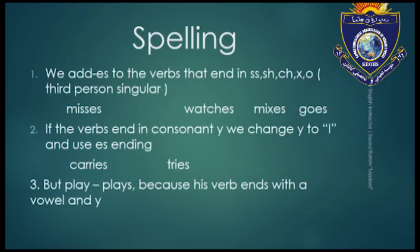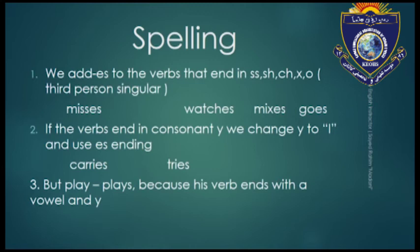Spelling rules: we add ES to verbs that end in S, SS, SH, CH, X, or O — for the third person singular. For example: miss → misses, watch → watches, mix → mixes, go → goes. Rule number two: if the verb ends in a consonant plus Y, we change Y to I and add ES. For example: carry → carries, try → tries. Rule number three: but if the verb ends in a vowel plus Y, we just add S — for example: play → plays.